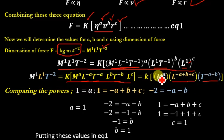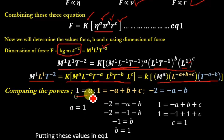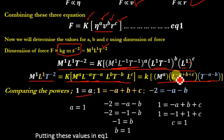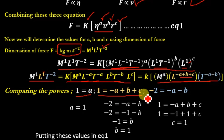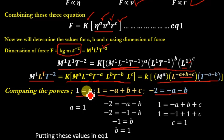Comparing the powers of this equation with the dimensions of force (M¹L¹T⁻²): for mass, M^A = M^1, so A = 1. For length, −A + B + C = 1. For time, −A − B = −2. We now have three equations to solve for A, B, and C. From the mass equation, A = 1.